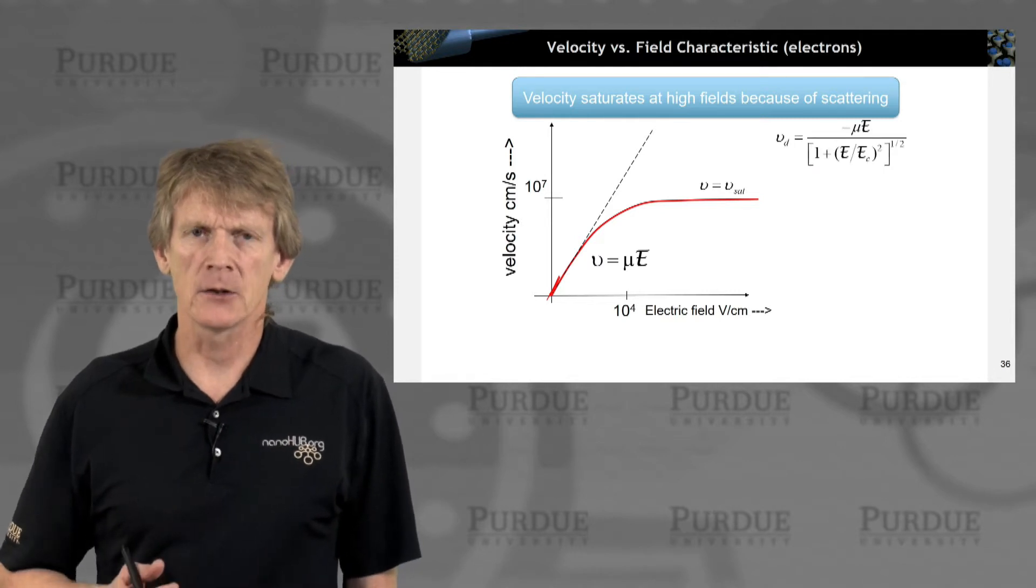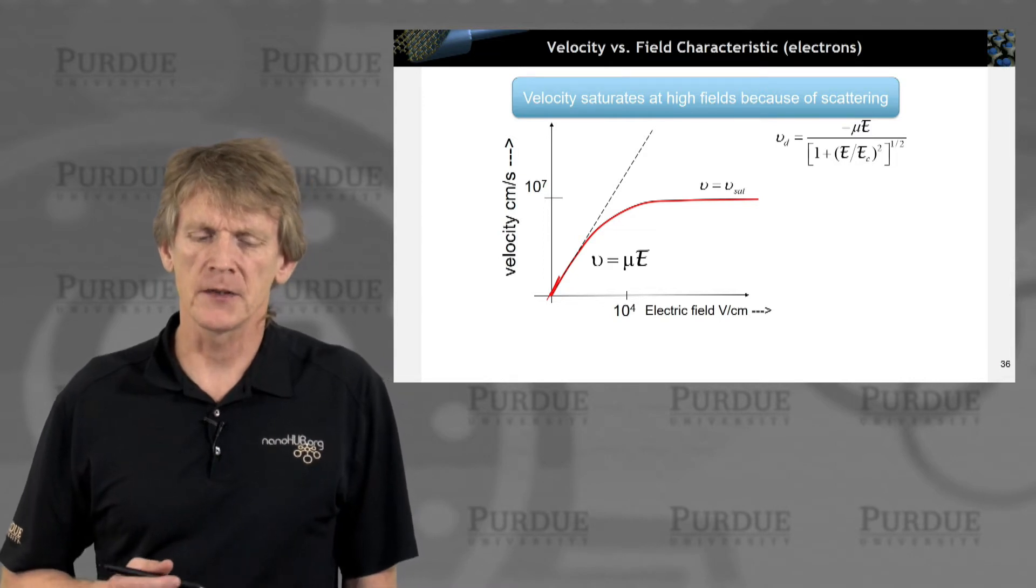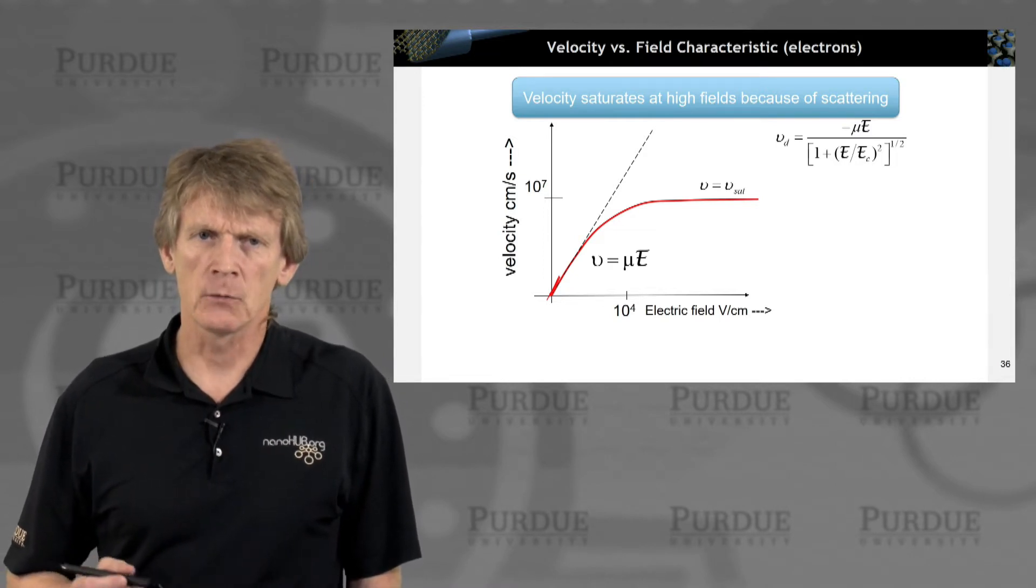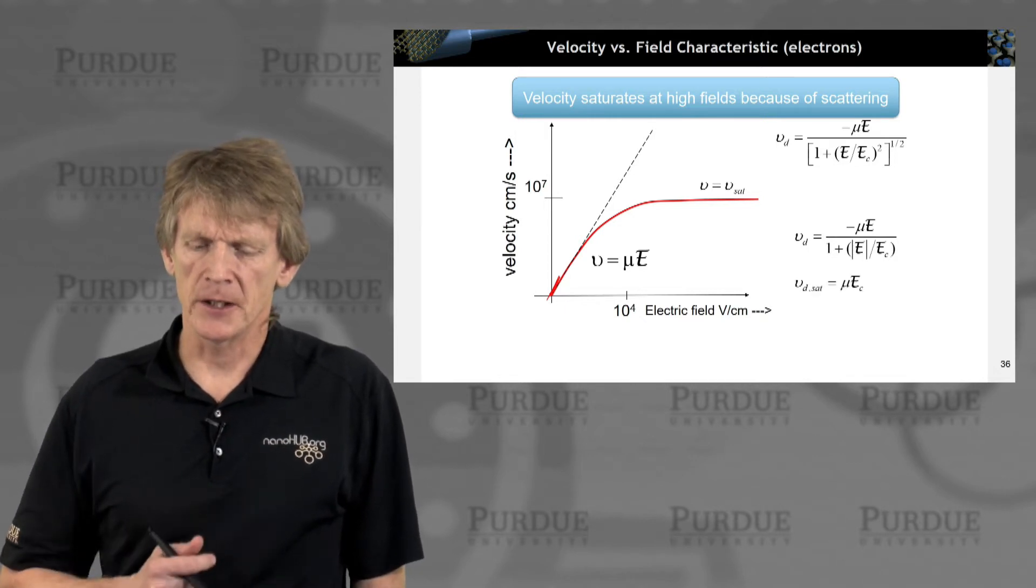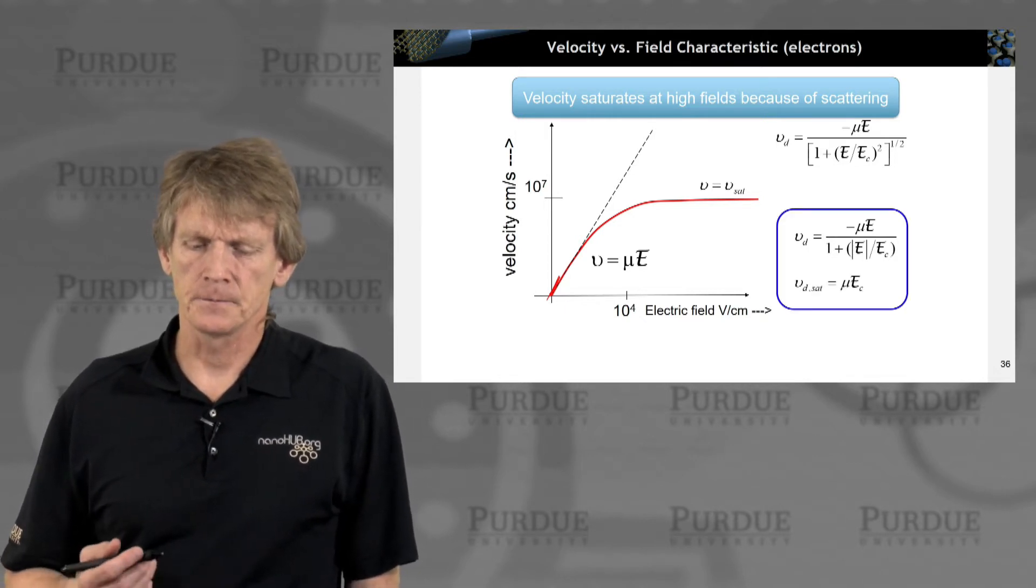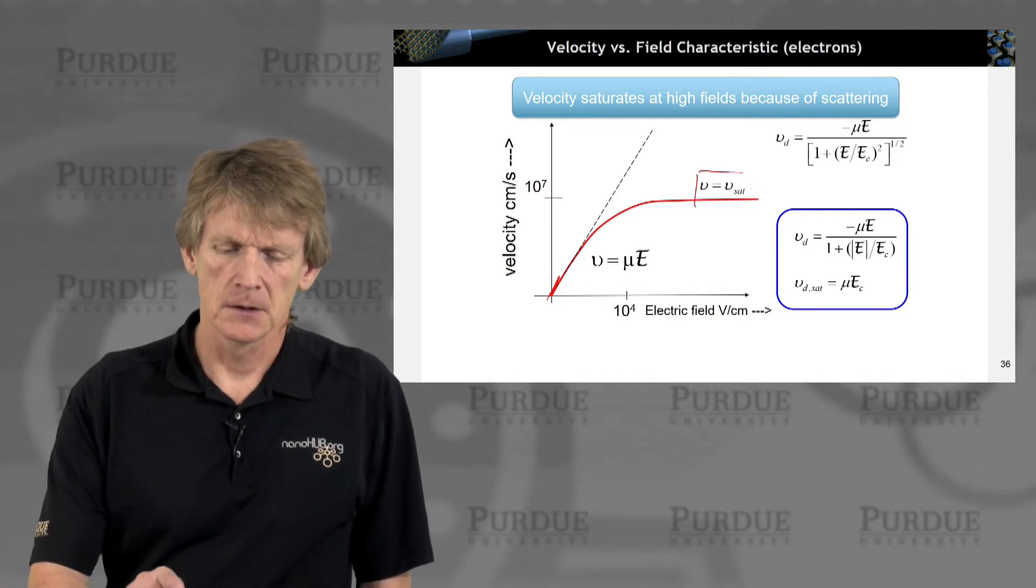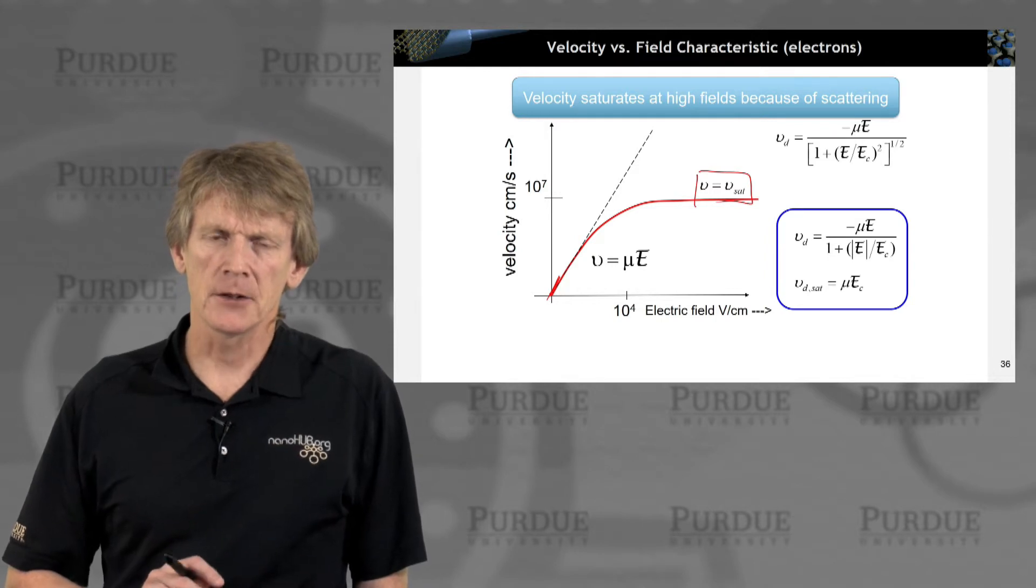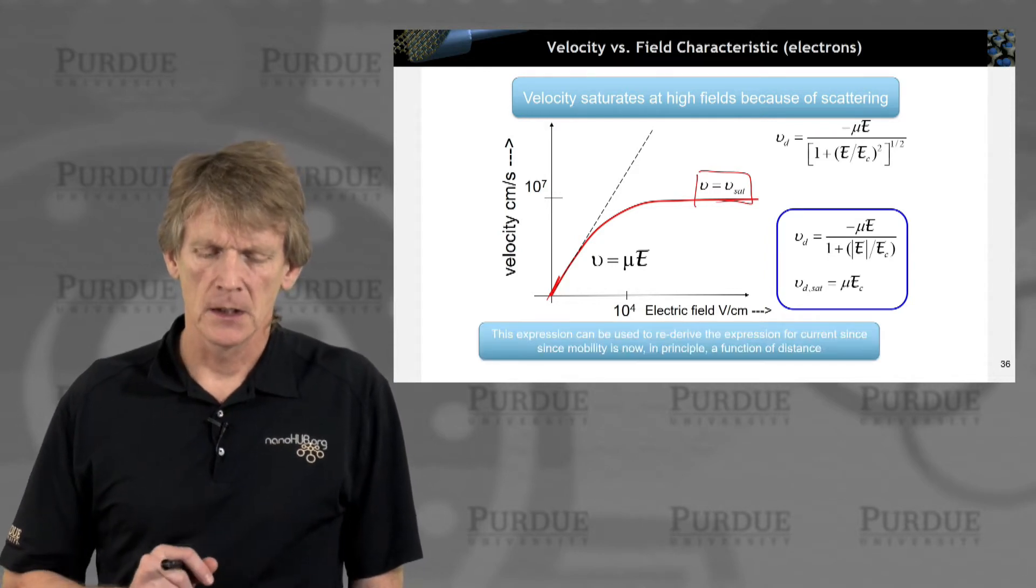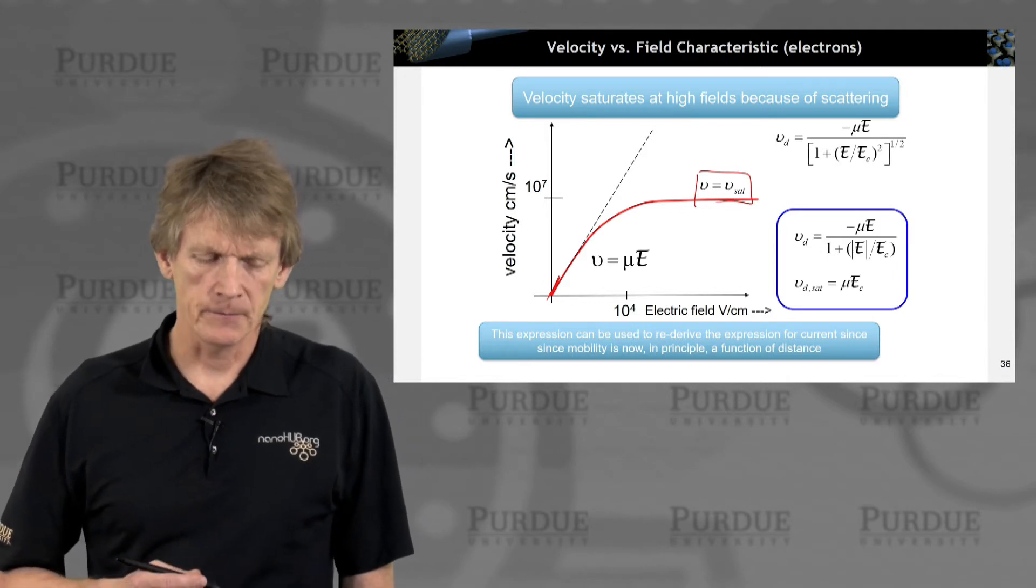We had written down expressions for such a saturation velocity based on some critical field after which the velocity tapers off. And here's the expression we basically had at some point reached a saturation velocity that is fixed. And here's sort of an expression as a function of electric field. Now you can think of that as also a function of mobility.